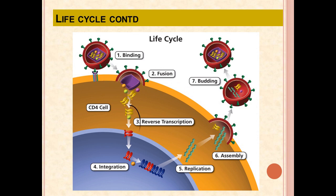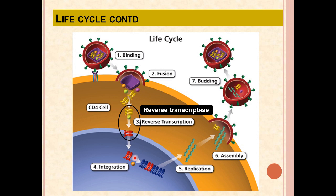The third step is reverse transcription. An enzyme called reverse transcriptase is used. The HIV viral RNA is converted to HIV DNA with the help of reverse transcriptase. The fourth step is integration, where an enzyme called integrase is used. The HIV DNA gets integrated into the CD4 cell's own DNA using integrase.